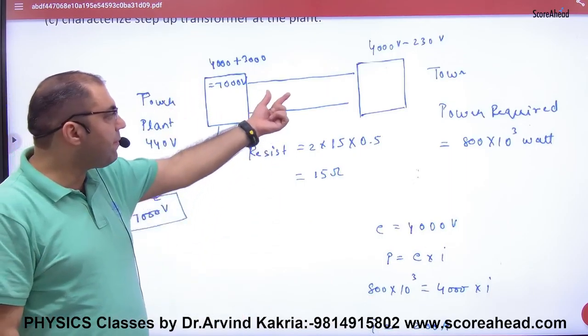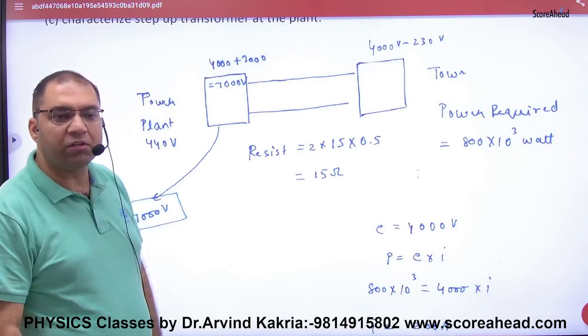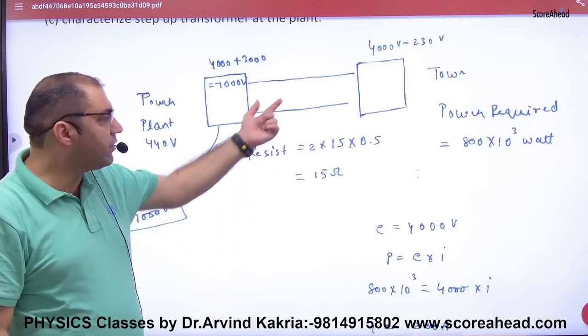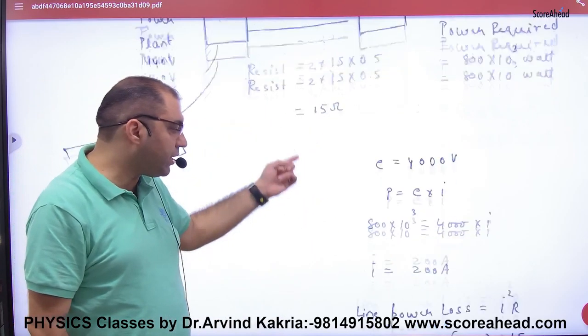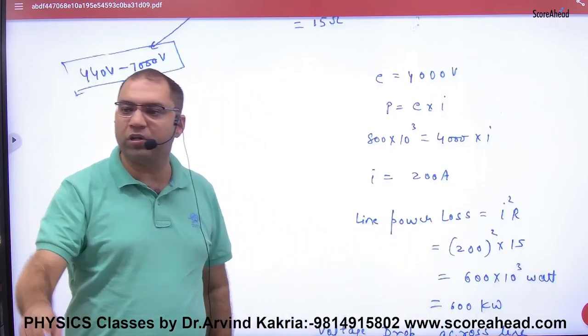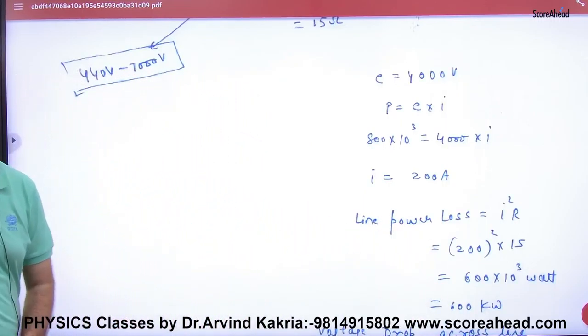Second, how much power loss is in the road? Power loss is I square R. Current is 200 ampere, resistance is 15. So I square R, 600 kilowatt power loss will be lost in the road.